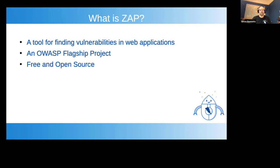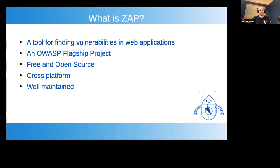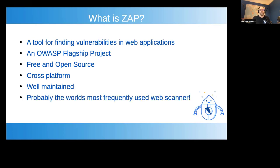Like all OWASP projects, ZAP is completely free and open source and cross-platform. As long as you have a JVM — it's written mostly in Java — it'll run. I've actually got it running on a Raspberry Pi before, although it wasn't particularly fast. It is well-maintained, and over the years we've seen a lot of open source web scanners come and go. ZAP is one of the very few that is actively maintained and is probably the world's most frequently used web scanner.